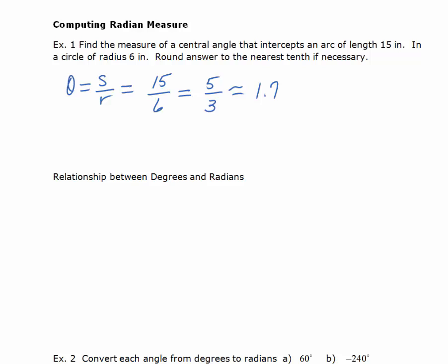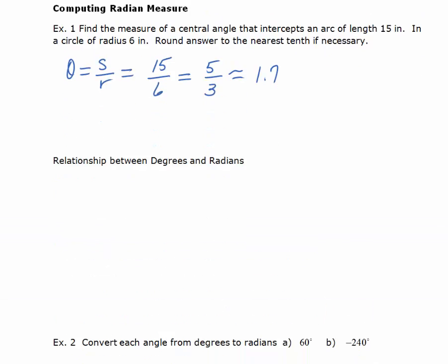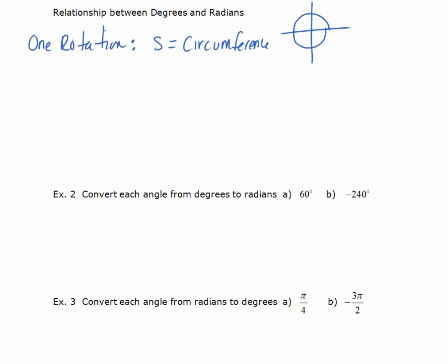Now let's look at the relationship between degrees and radians, starting with the arc length of one whole rotation. If we have one full rotation of a circle, the arc length would be the circumference. The formula for circumference is c equals 2πr. So for one rotation, s equals the circumference, which equals 2πr — this is the arc length of one rotation.